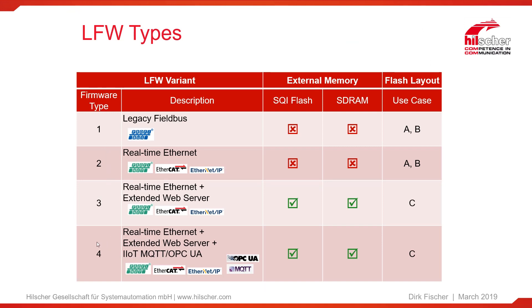On the next slide I show you a table which summarizes the different firmware types. As you can see, Type 4 — the full-blown version with OPC UA, MQTT, and the extended web server — requires external flash and external SDRAM, so we need more hardware components. The flash layout is called use case C, which is explained in other video tutorials. In contrast, Firmware Type 2, without the extended web server and without IoT protocols, does not need external memory. So it's possible to have a smaller, cheaper hardware.